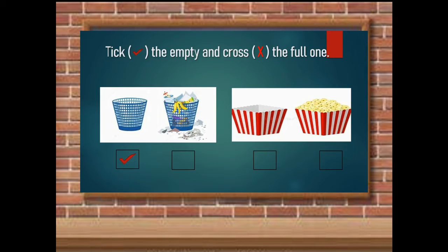And the next trash bin is full. So you have to cross it out. The next one is we have the bucket popcorn. Tick the empty bucket popcorn and cross out the full bucket popcorn.